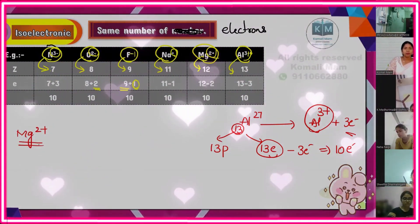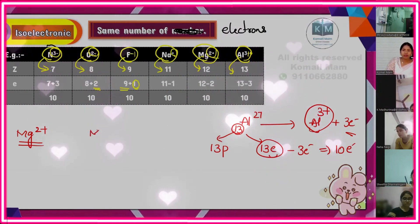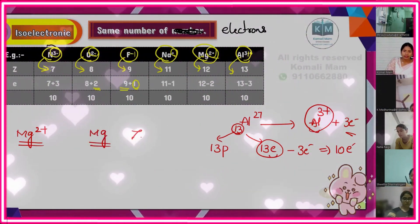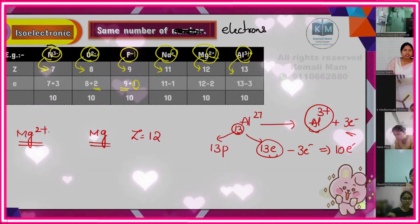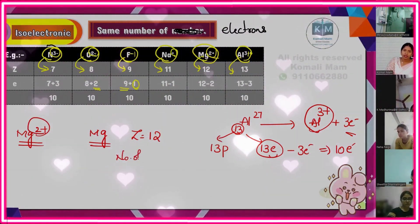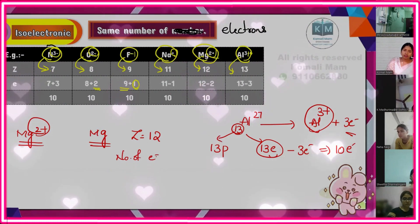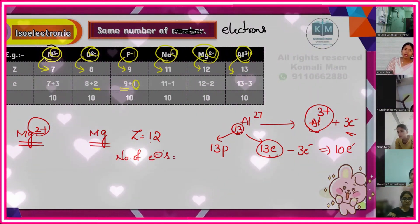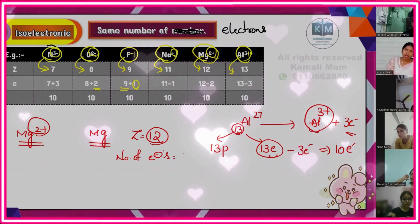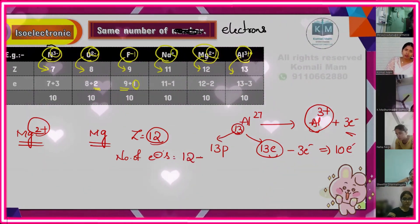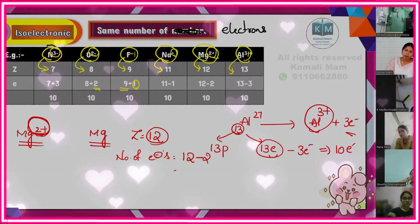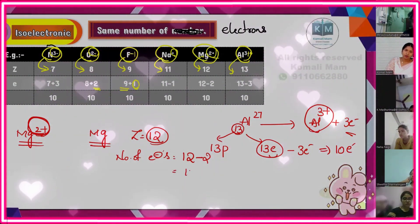Magnesium — what is the atomic number of magnesium? 12. Atomic number is 12. What is the charge present on it? Plus two. Okay, number of electrons — how do you calculate? Atomic number 12 means 12 electrons, but it already lost two electrons, so 12 minus 2.